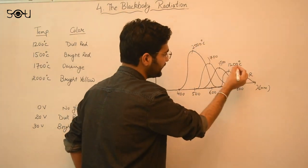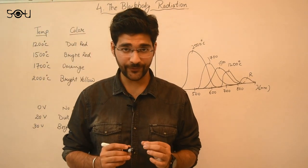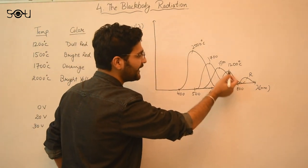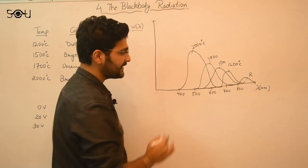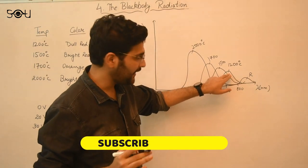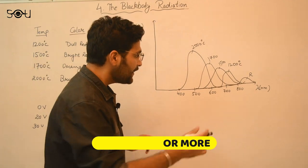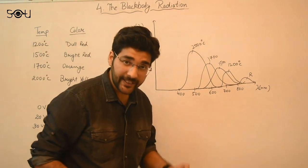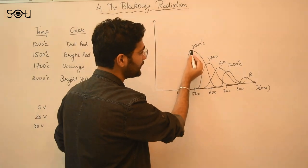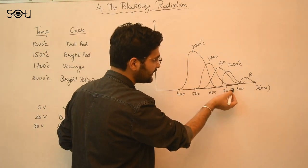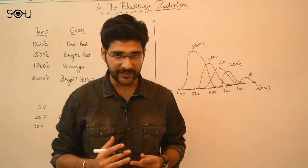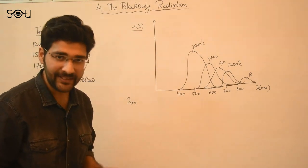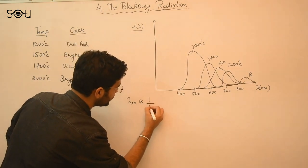Now do you see something very particular from this curve? One thing you should notice is the wavelength at which we get the maximum intensity decreases as the temperature increases. At 1200 degrees Celsius the peak was at around 700 nanometers, but as the temperature increased, the wavelength at which we get the maximum intensity decreased — around 500 nanometers at 2000 degrees Celsius. So mathematically, lambda_m, the wavelength at which we get the peak intensity, is inversely proportional to the temperature.